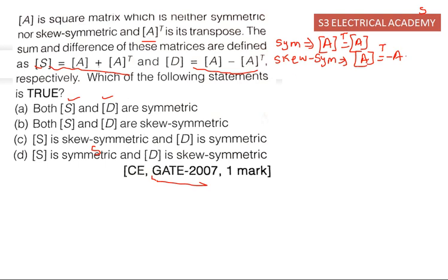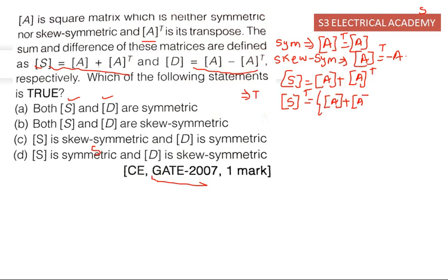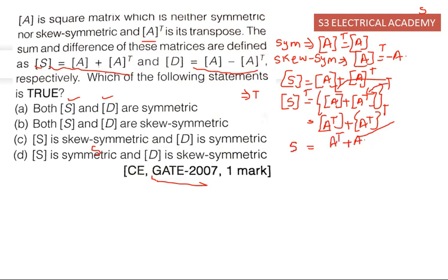First, we consider the sum: S is equal to A plus A-transpose. We take the transpose on both sides, so S-transpose is equal to (A plus A-transpose) whole transpose. We split the transpose into two terms: A-transpose plus (A-transpose) whole transpose. Now, (A-transpose) whole transpose is equal to A, so we get A-transpose plus A.